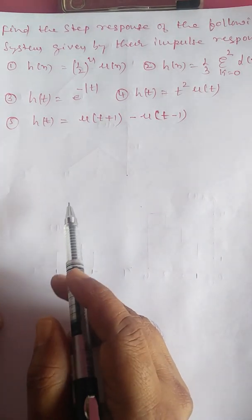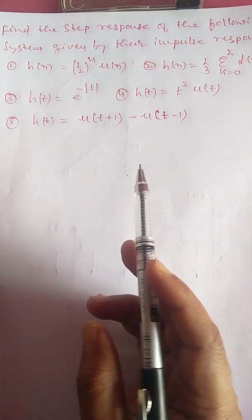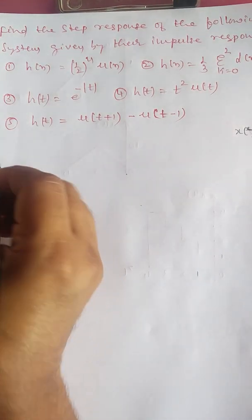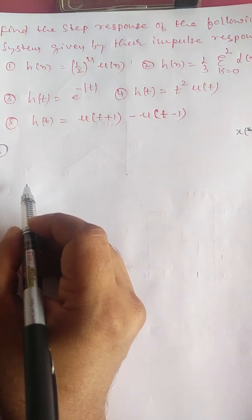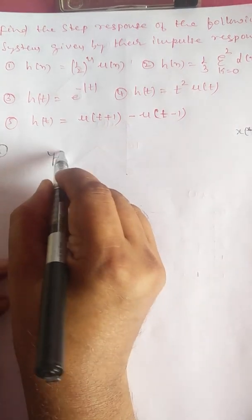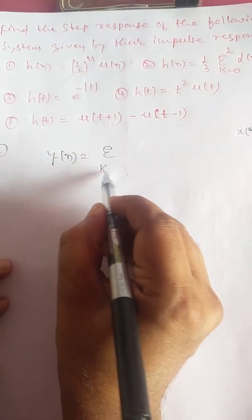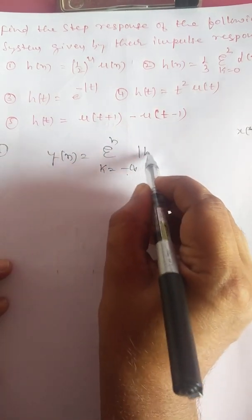The question is finding the step response. Step response means the input signal is u(t) — that is, x(t) = u(t). To solve the first problem, the step response of a discrete-time LTI system is given by y[n] = summation of k from minus infinity to n of h[k].